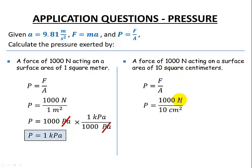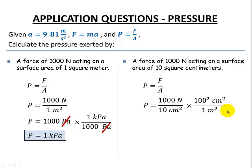So there's our 1,000 newtons and our 10 square centimeters. But we can't leave the centimeters squared — we need square meters, that's the condition for using this formula. We know there are 100 centimeters in one meter, and to get area we have to square these, so 100² centimeters squared equals one meter squared. Now our centimeters squared cancel out, and we have newtons per meter squared.